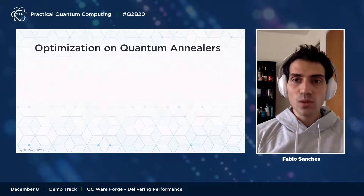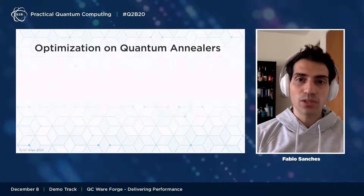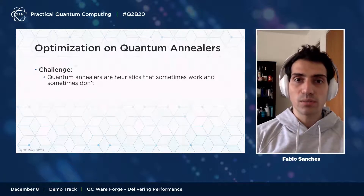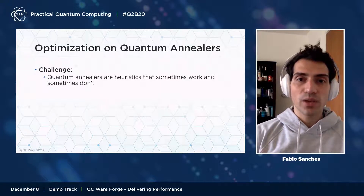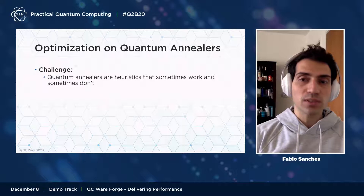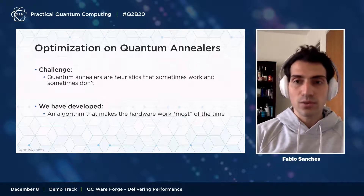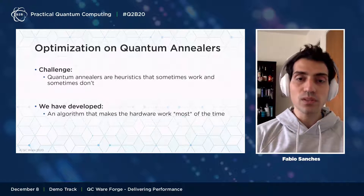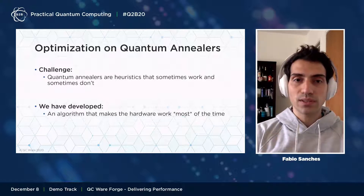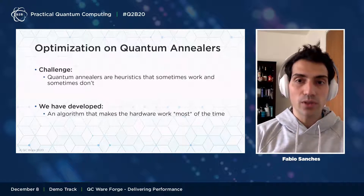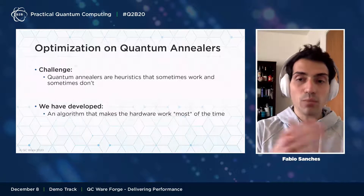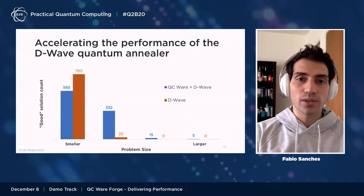One way to solve optimization problems using quantum computers is making use of quantum annealers. Quantum annealers essentially provide a heuristic way to solve specific optimization problems. As is the case with many heuristics, the quality of solutions can vary. What we've developed is a way to tune certain annealing parameters on D-Wave's device that actually improves the outcome of quantum annealing.